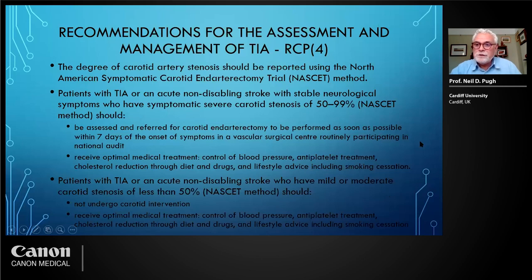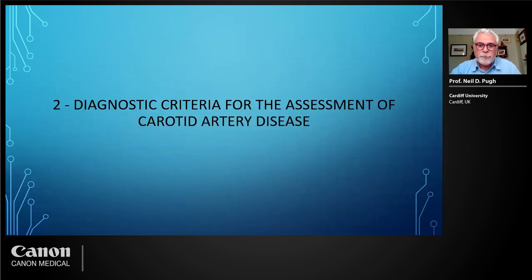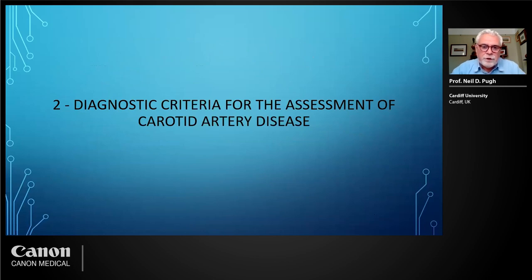If a patient has a TIA or non-disabling stroke with mild or moderate carotid stenosis — that is less than 50% lumen reduction — they should not undergo carotid intervention and should receive optimal medical treatment. That's the rationale adopted in the UK and also in many other countries. We can now move on to talk about how we assess carotid artery disease and look at the diagnostic criteria, which is very important to understand before making an accurate assessment.